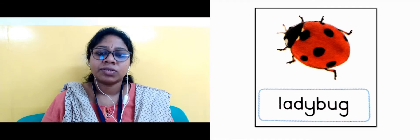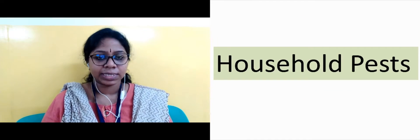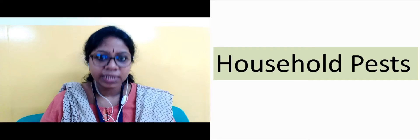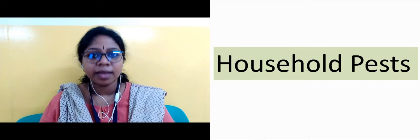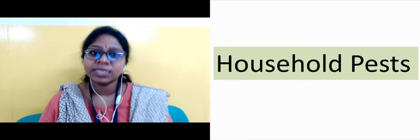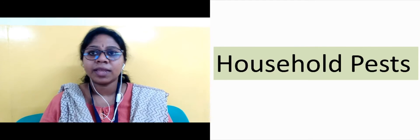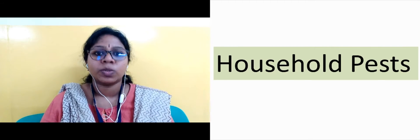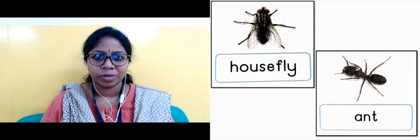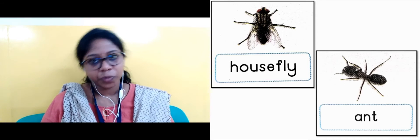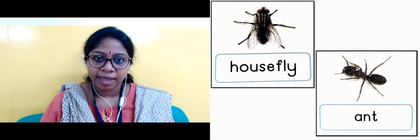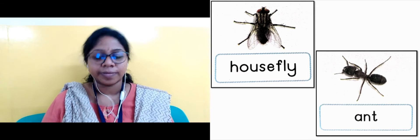In the next slide it's written Household Pests. That means the small insects we commonly see inside our house — we will look at those now. The first one is housefly — what we call makhi. Next is ant.